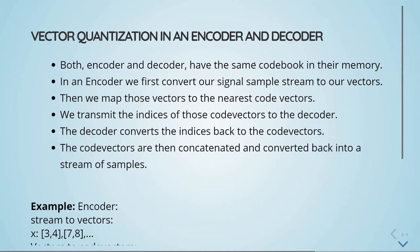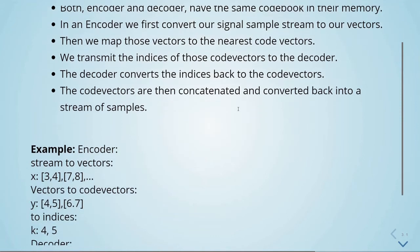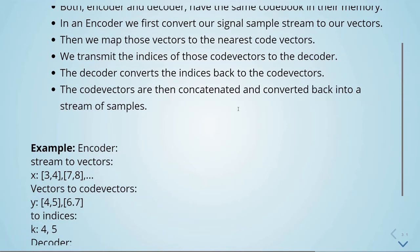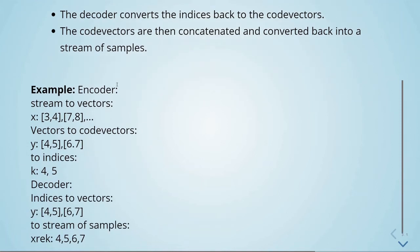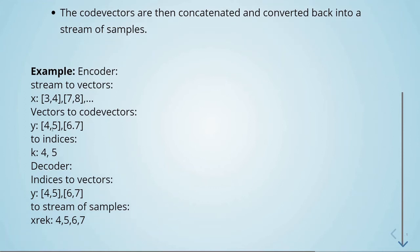Looking at vector quantization in an encoder-decoder system: both encoder and decoder have the same codebook in memory. The encoder converts the signal sample stream to vectors, maps those vectors to the nearest code vectors, and transmits the indices of those code vectors to the decoder. The decoder converts indices back to code vectors, then concatenates and converts them back into a stream of samples.